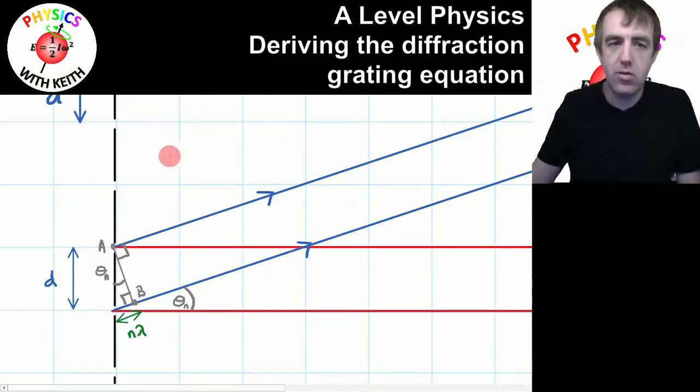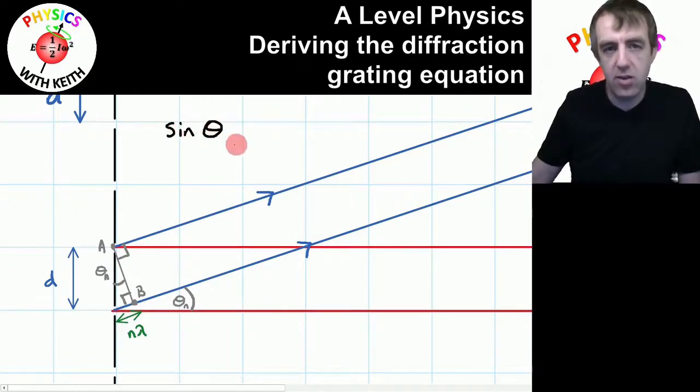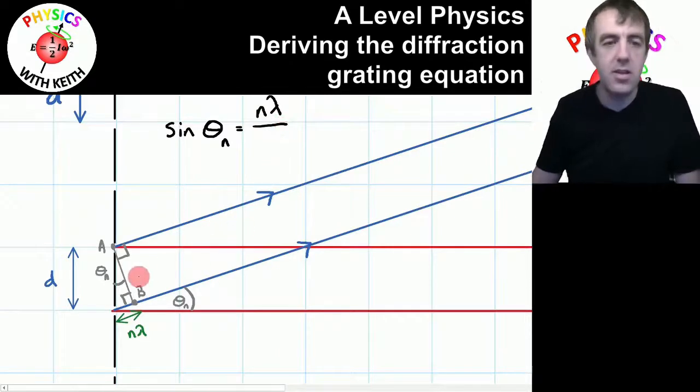Because it's a right angle triangle, we've got the opposite and the hypotenuse, we can say that the sine of that angle, sine theta is going to equal the opposite, which is n lambda, divided by the hypotenuse, which is d.